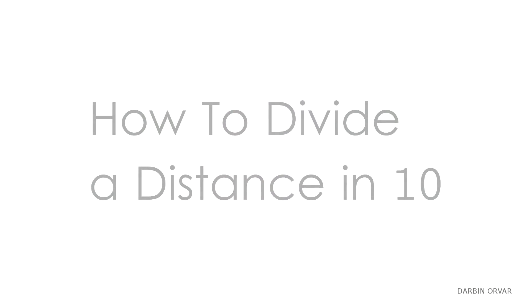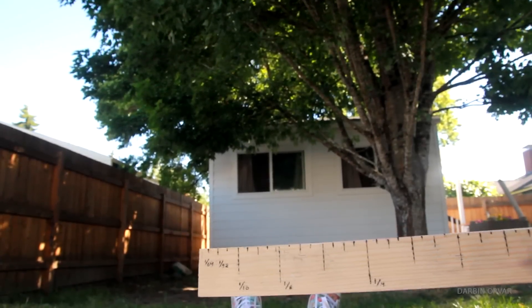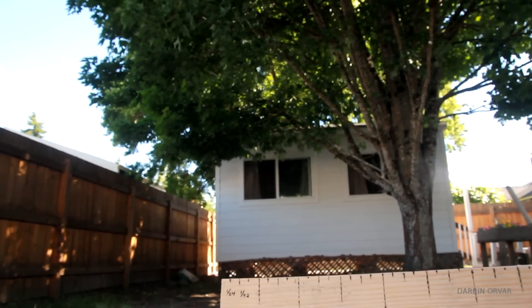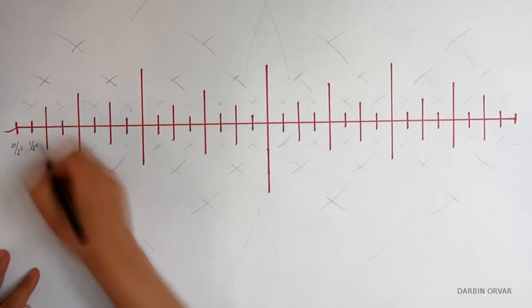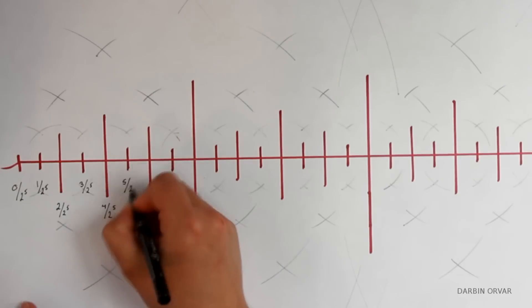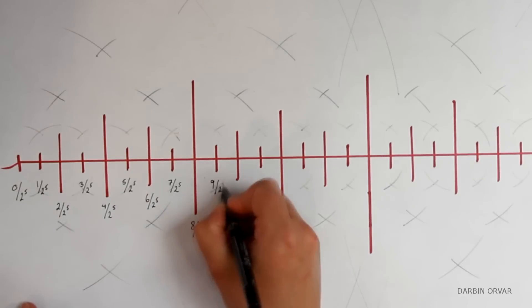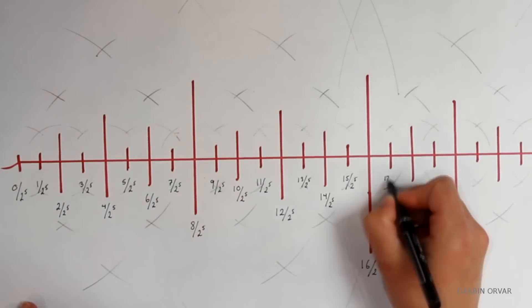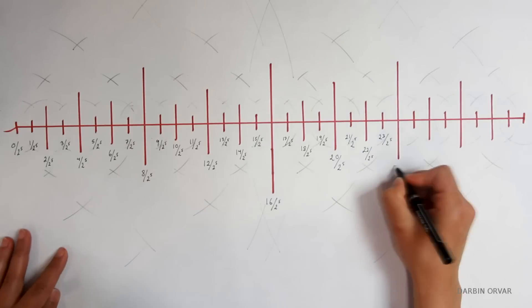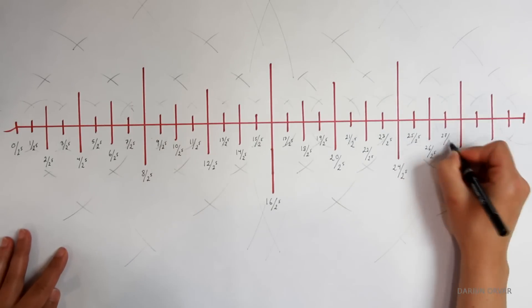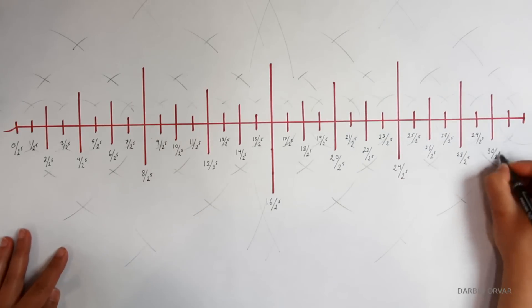That's not to say I couldn't figure out what a tenth of a distance is — I totally could. However, I would have to bisect a line a couple of times first, in order to get a distance small enough to work with. Let's take this example: this line is broken down into 32 parts.